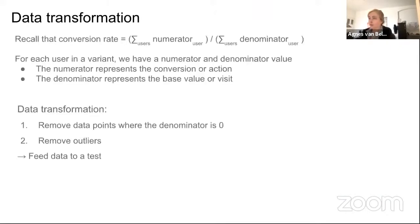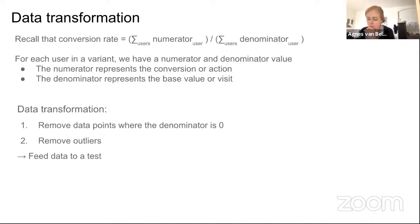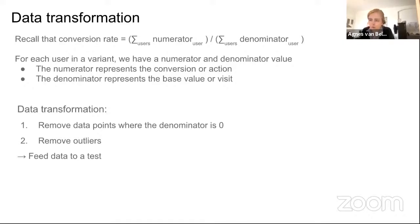Now for data transformation. Recall that metrics are based on the conversion rate, which is the sum of all numerator values per user divided by the sum of denominator values for all users. As data transformation, you want to remove data points where the denominator or base value is zero — because there is no visit preceding the conversion — and also remove outliers. After that, you feed the data to a statistical test.